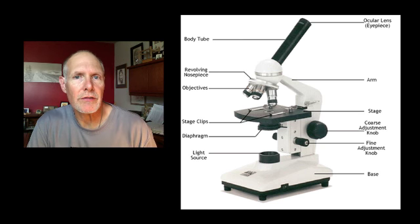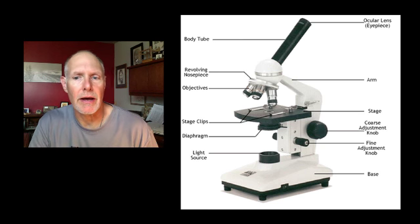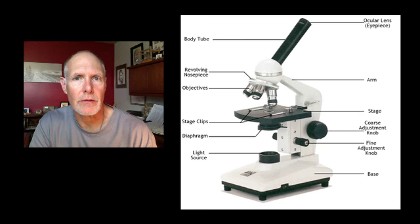The stage is the place where you place the slide, and the slide's held in place by the clips. The diaphragm is the opening that allows light to come up through the bottom. And then you have two adjustment knobs. The coarse adjustment knob gets you in the right area. Then the fine-tuned one really helps you dial in on the object that you're looking at. Then there's a light source and a base.